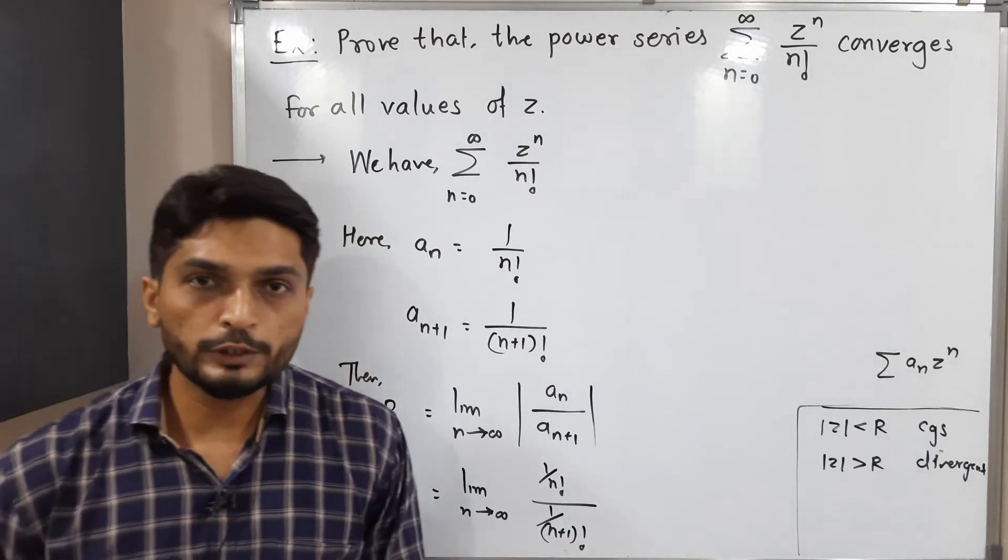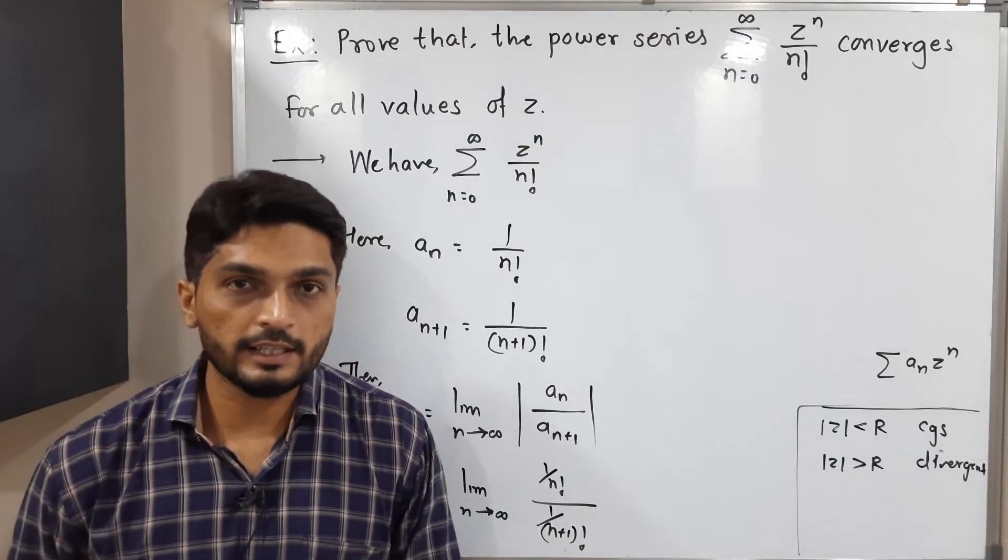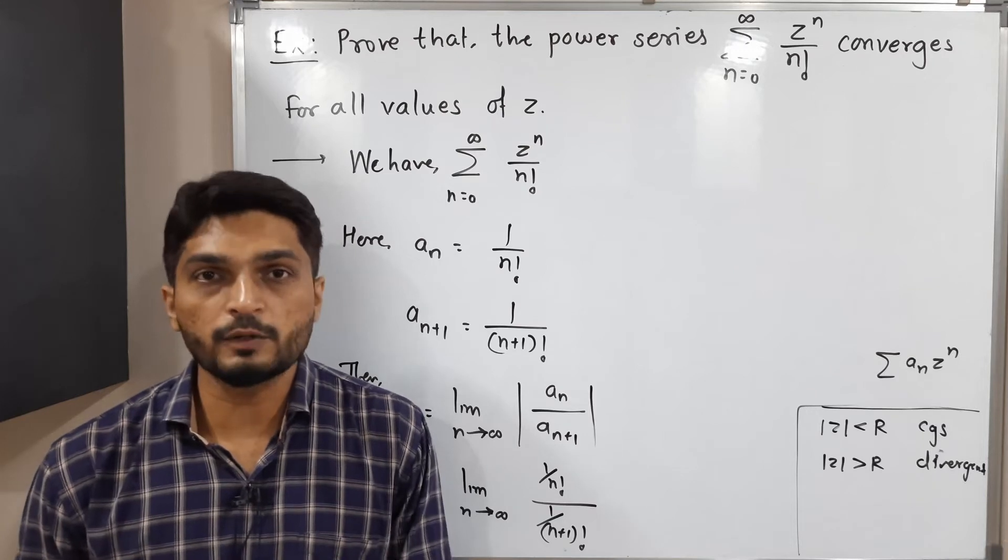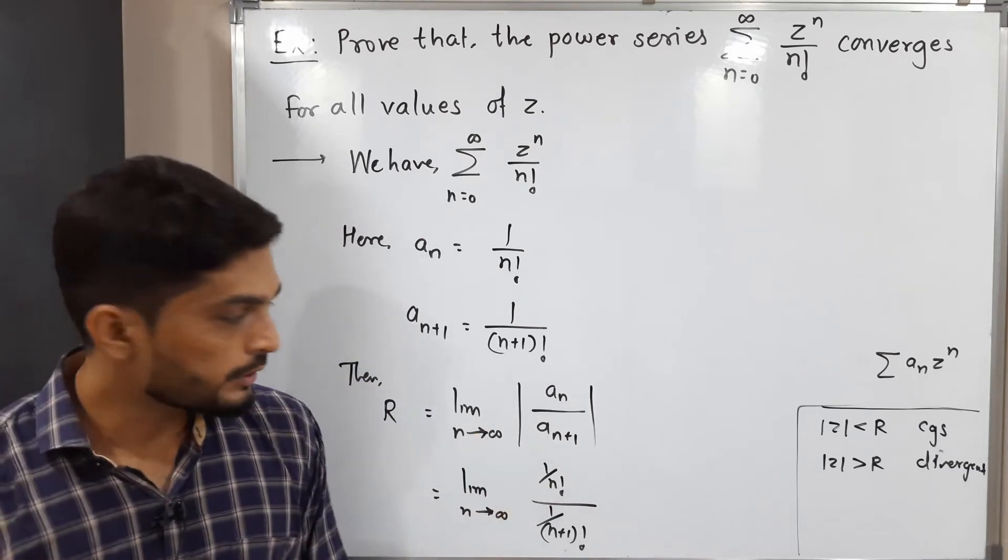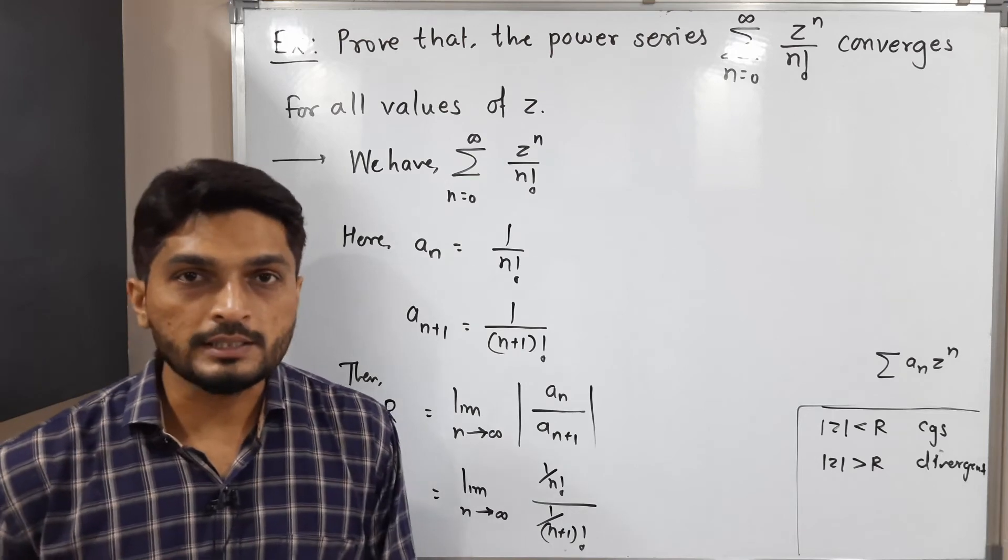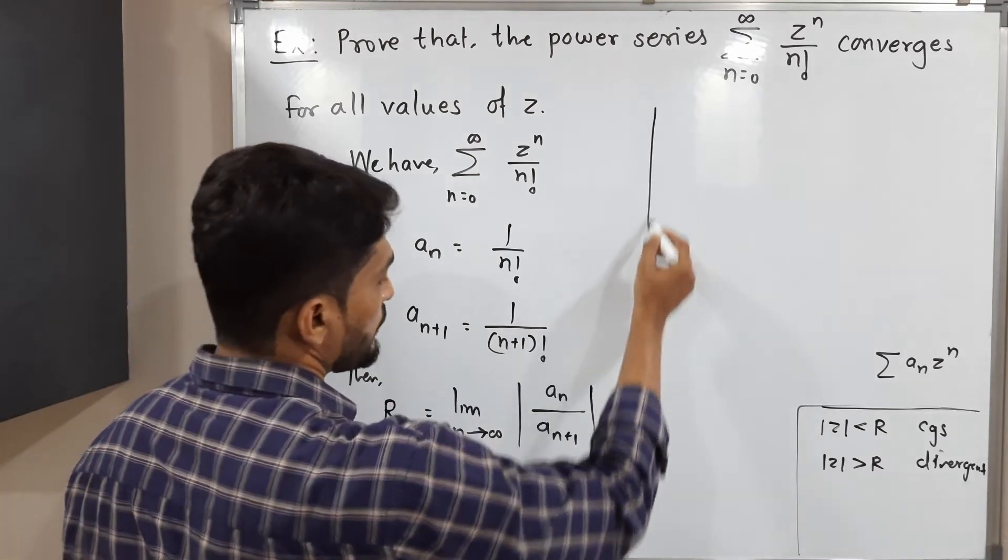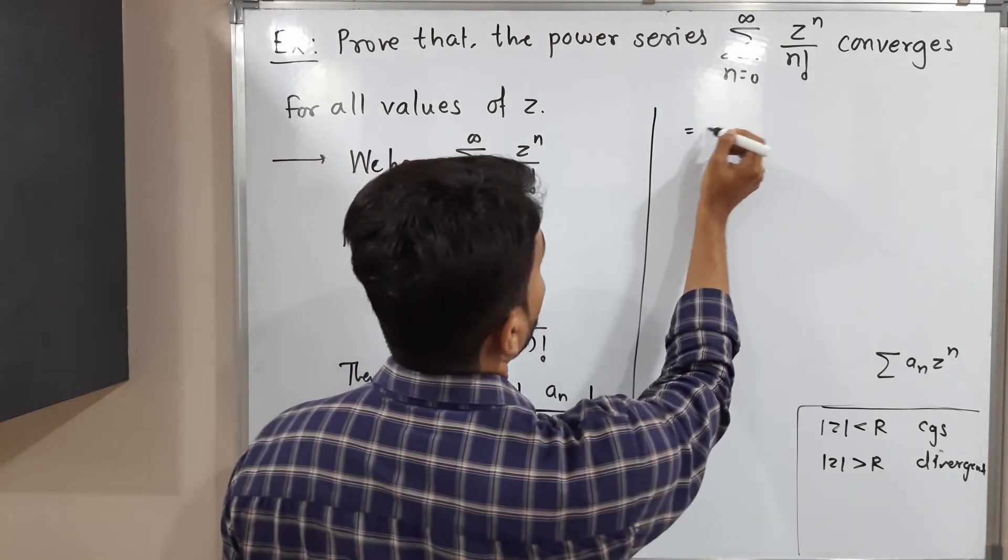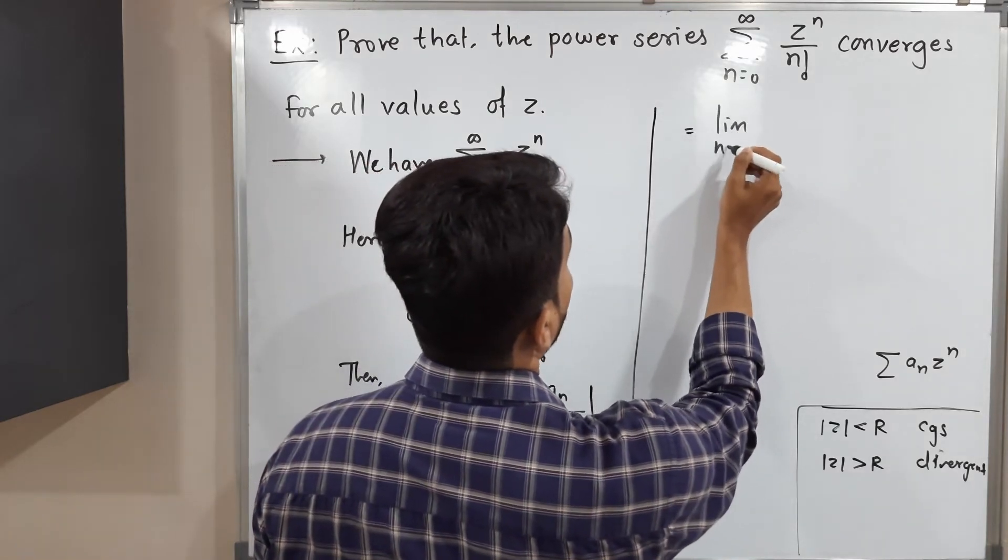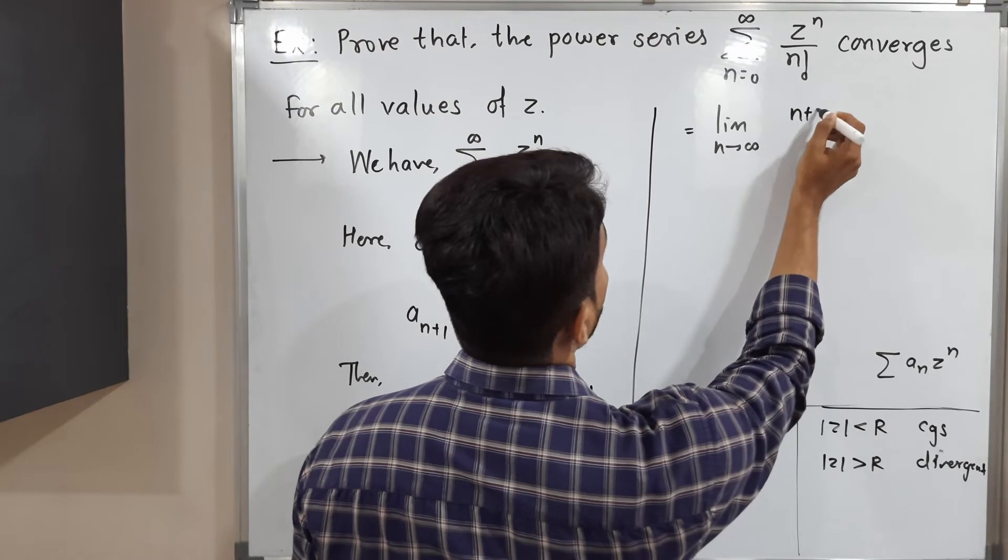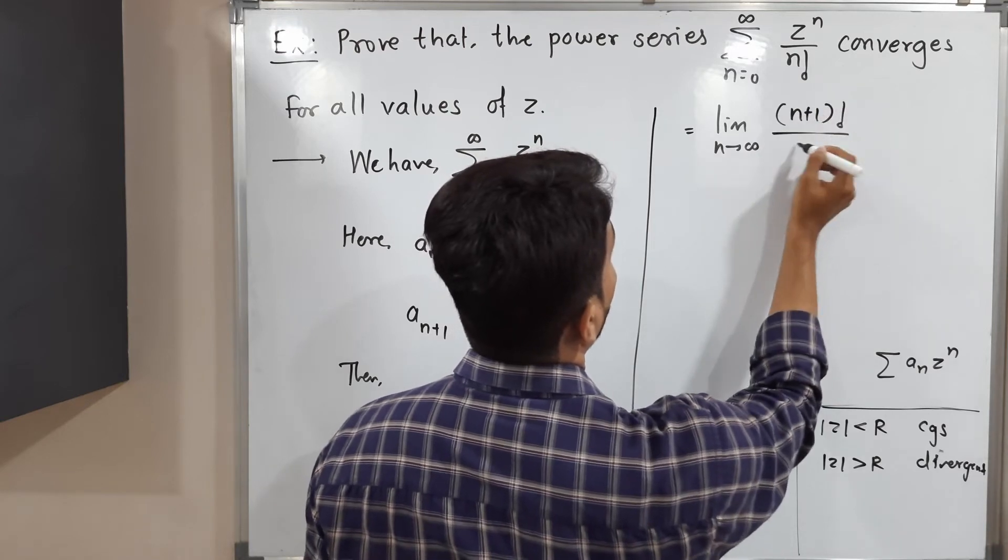Actually no need to apply mod since factorials are there, so obviously we will have positive real numbers. So that n plus 1 factorial is in denominator of denominator, so we can shift to numerator. So this is equal to limit n tends to infinity n plus 1 factorial upon n factorial.